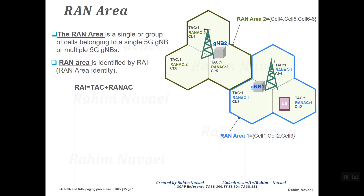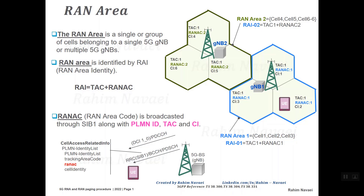A RAN area is specified by a RAN area identity, which consists of a tracking area code and optionally a RAN area code. In this example we have two RAN area IDs: RAN area ID 1 and RAN area ID 2. The RAN area code is broadcast through System Information Block 1 (SIB1) along with the PLMN ID, tracking area code, and cell identity.